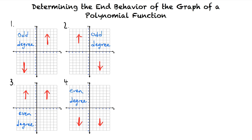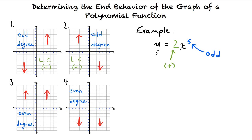For the leading coefficient, we need to look at its sign. For an odd number degree, if the leading coefficient is positive, then the graph falls to the left and rises to the right — we'll write leading coefficient here as LC. In contrast, for an odd number degree, if the leading coefficient is negative, then the graph rises to the left and falls to the right. For example, think of the function y equals 2x to the fifth. It has an odd degree of 5 and a leading coefficient of positive 2, so the end behavior is that it falls to the left and rises to the right, which is end behavior type 1.